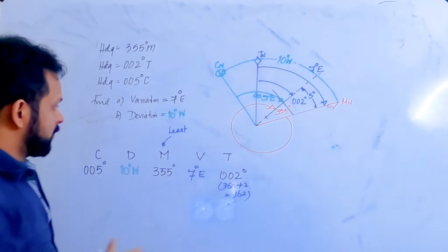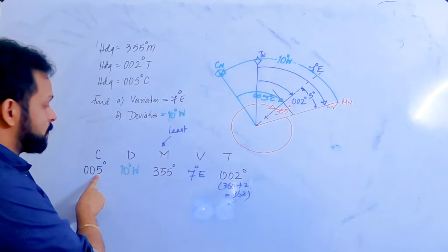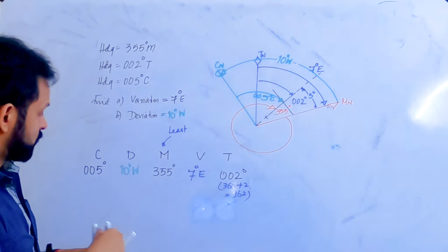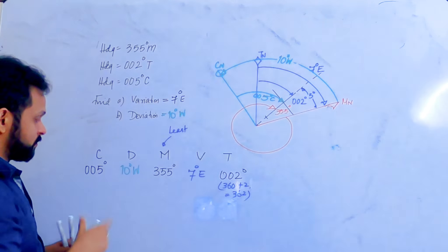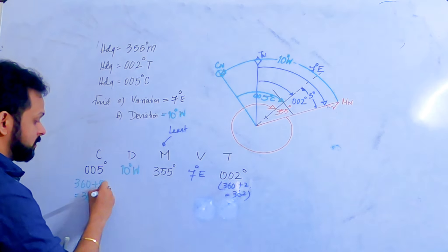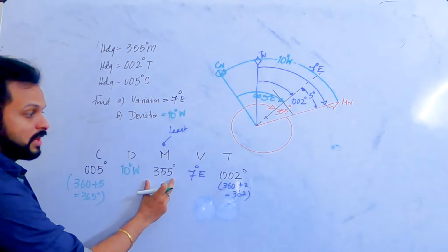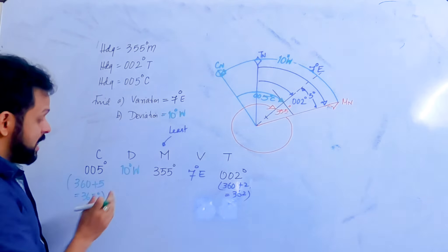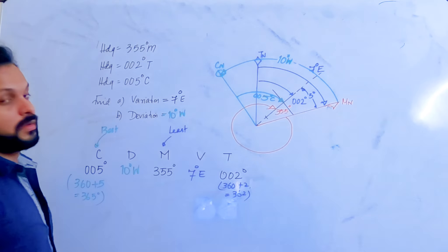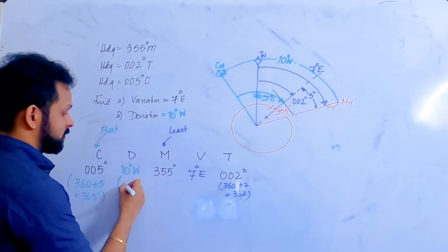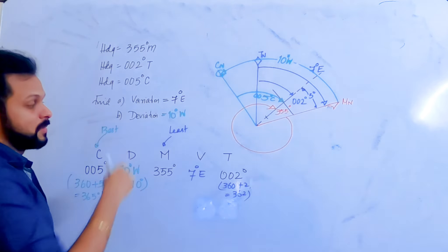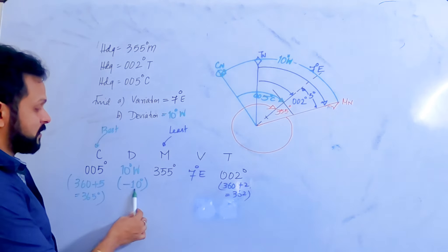Looking at the figures: magnetic value is 355° and compass value is 5°. You might think compass is less and therefore East, but 5° is actually 360° + 5° = 365°. Comparing 365° to 355°, the difference is 10° and 355 is more — so compass is 'best', meaning deviation is West. This is represented as minus 10°, applied to compass to get magnetic: 365 minus 10 equals 355.